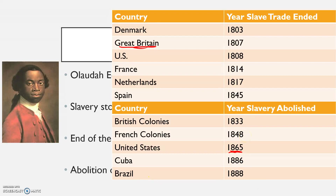While slavery died out in the Americas by the end of the 19th century, the impact of the Atlantic slave trade can still be seen through the African diaspora — the spreading out and scattering of Africans — and the distinct African-American communities in the US, the Caribbean, and South America. That wraps things up for chapter 26 on the impact of the Atlantic slave trade; with chapter 27 we'll be going back to China.